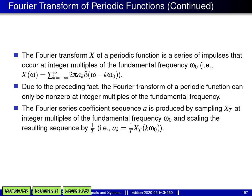I'd like to make a few comments about these results. First, the Fourier transform of a periodic function always consists of a series of impulses, where the impulses occur at integer multiples of the fundamental frequency. This follows from the equation for big X: each term on the right-hand side is a delta function shifted by an integer multiple of omega naught, scaled by the constant factor 2 pi times a subscript k, and then all terms are summed together.